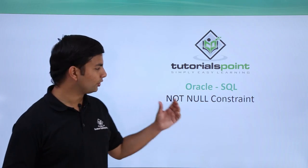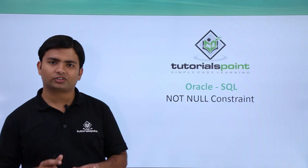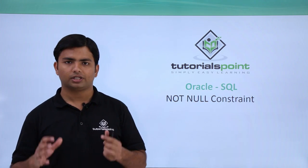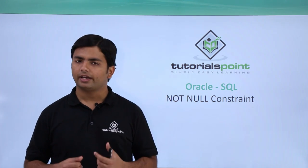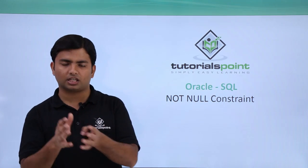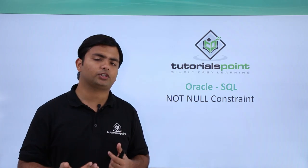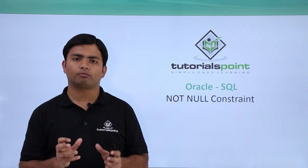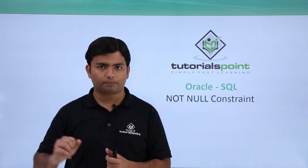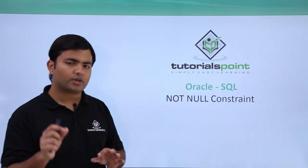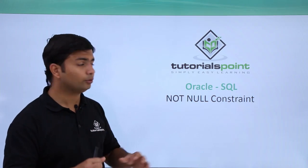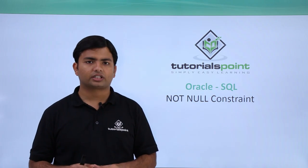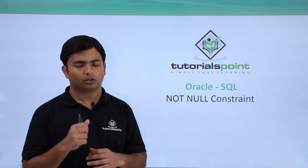In this video we will cover the NOT NULL constraint. The NOT NULL constraint is used when you want a particular column to always have a value. For example, if you have a table called 'employee' with fields like first name, last name, and email ID, some details should be mandatory — similar to how an asterisk in a UI indicates a required field. In the backend, you apply the NOT NULL constraint on a specific column to enforce this. Importantly, NOT NULL can only be applied at the column level, not at the table level.